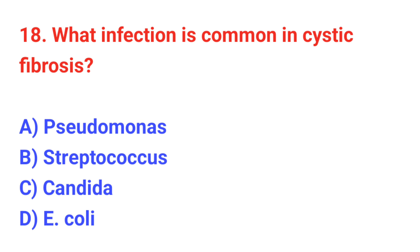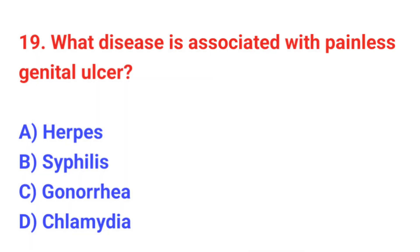Question number 18: What infection is common in cystic fibrosis? The correct answer is D: Pseudomonas. Question number 19: What disease is associated with a painless genital ulcer? The correct answer is B: Syphilis.